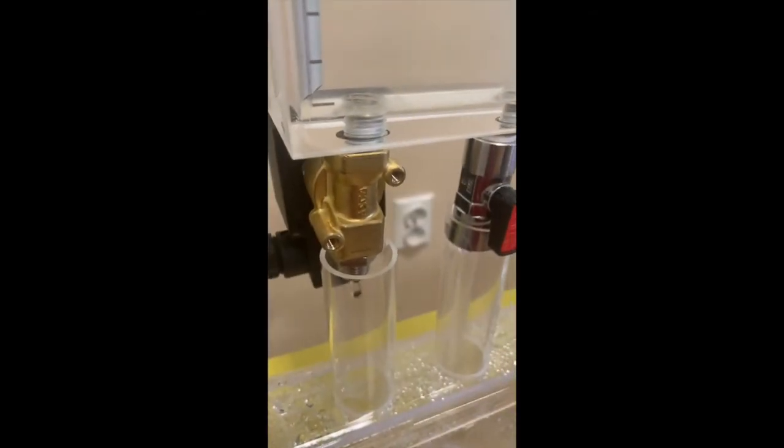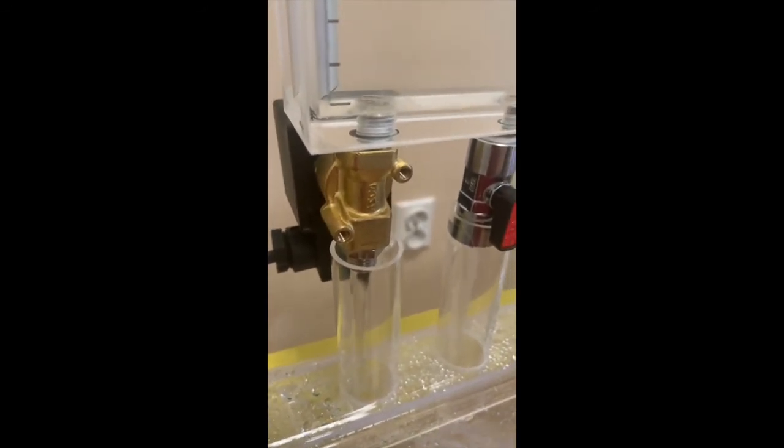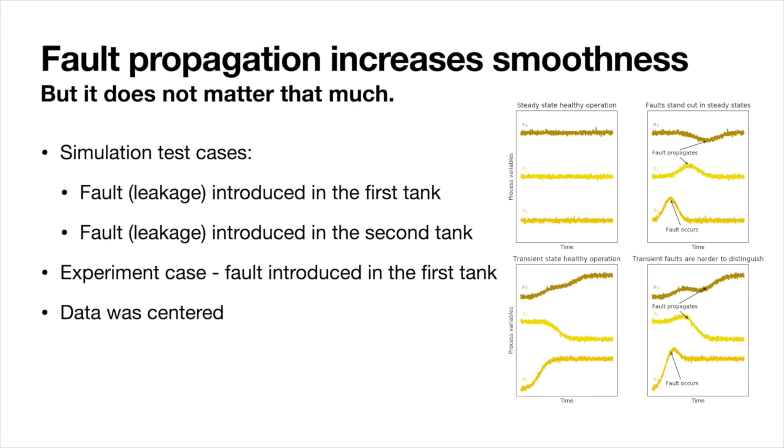We can artificially induce faults by opening the electromagnetic valve. For our analysis, we will focus on the behavior of faults in our water tank system. Generally, fault propagation introduces smoothing. What does it mean? It means that when in our process, somewhere near the start or in earlier phases of operation, a fault occurs...